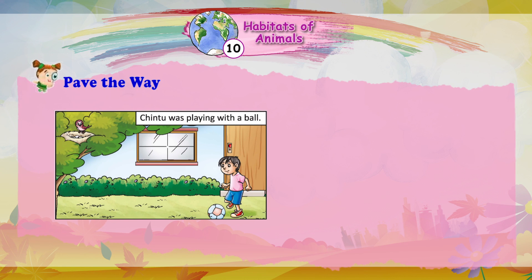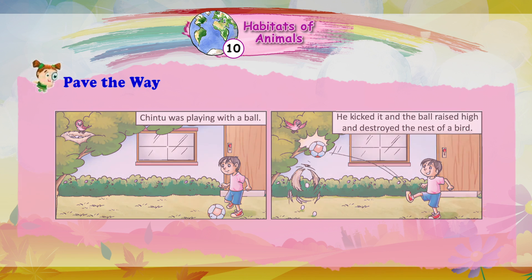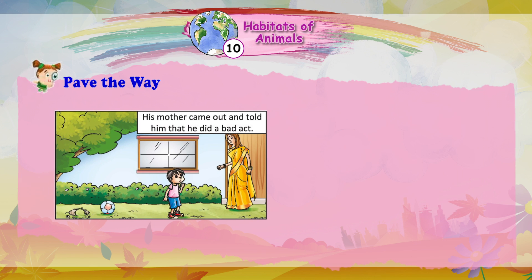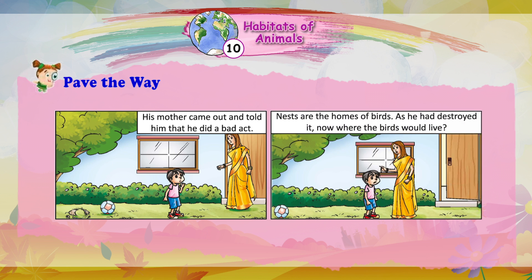Chiltu was playing with a ball. He kicked it and the ball raised high and destroyed the nest of a bird. His mother came out and told him that he did a bad act. Nests are the homes of birds. As he had destroyed it now, where would the birds live?